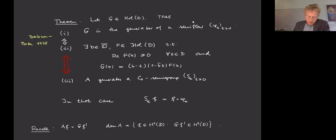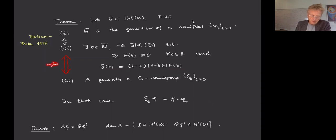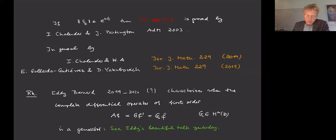The semigroup then has a natural form — it is just composition by the semi-flow. This equivalence is due to Isabelle Charandin and Jonathan Partington in the case where the semigroup is quasi-contractive. The general case remained open for some time.